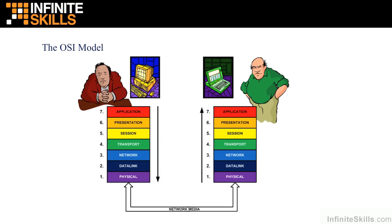Here we see a user on the left who is using a computer and applications, desiring to send a file to another computer across the corporate network. The information has to pass down through this network stack, which is part of the network operating system. At each layer of the OSI model, we process the information being transmitted from sender to receiver, from source to destination, differently depending on the nature of the network, whether we're encrypting and compressing, and the capability of the remote node.